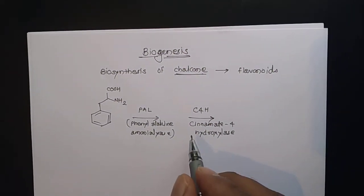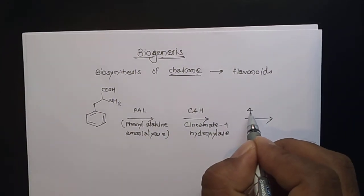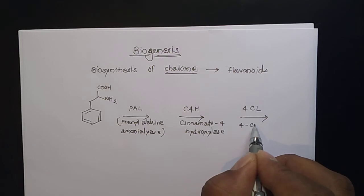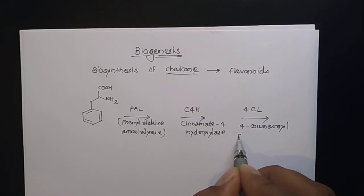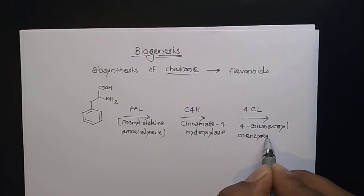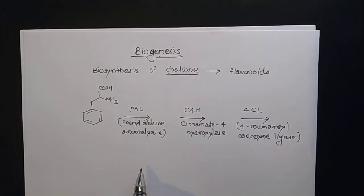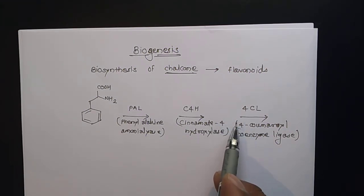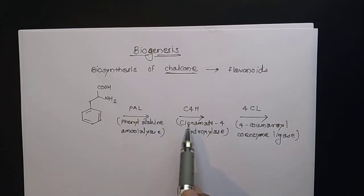From that intermediate you then add 4CL, which is 4-coumaroyl CoA ligase. And if you remember, while preparing lignin, stilbene-type compounds, or coumarin-based compounds, we have already learned these three steps: phenylalanine → cinnamic acid → p-coumaric acid → 4-coumaroyl CoA.